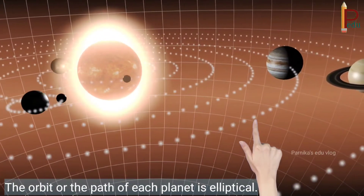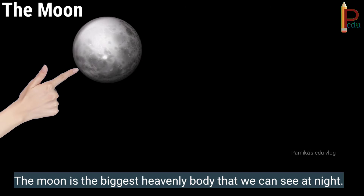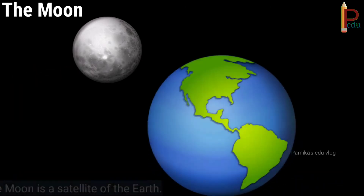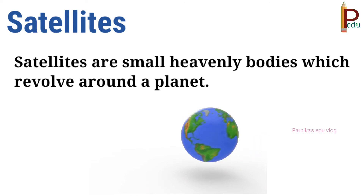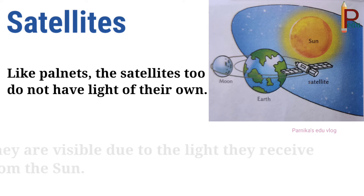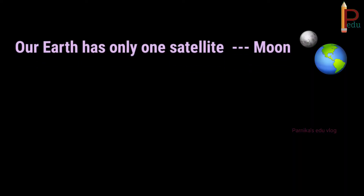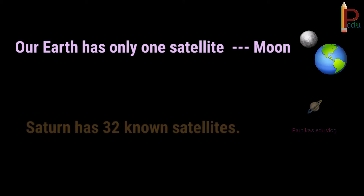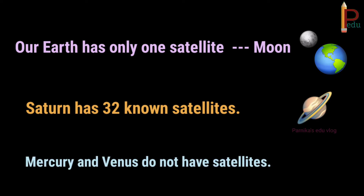The orbit or the path of each planet is elliptical. The moon is the biggest heavenly body that we can see at night. The moon is a satellite of the earth. Satellites are small heavenly bodies which revolve around a planet. Like planets, the satellites too do not have light of their own. They are visible due to the light they receive from the sun. Our earth has only one satellite, that is the moon. Saturn has 32 known satellites, whereas Mercury and Venus do not have satellites.